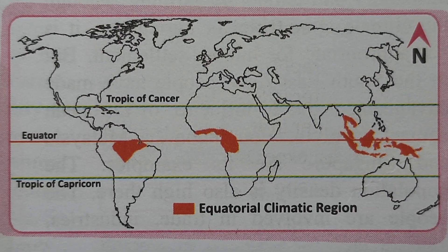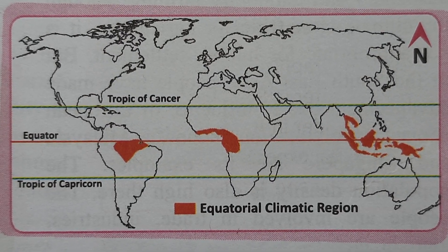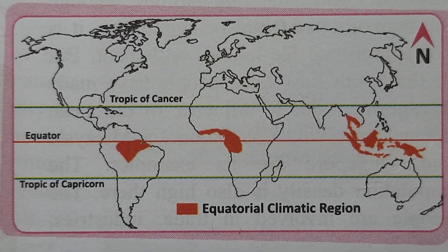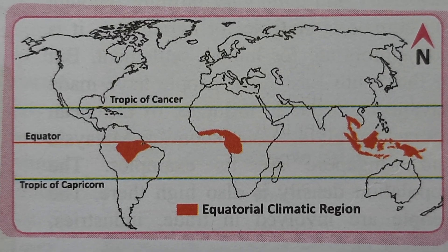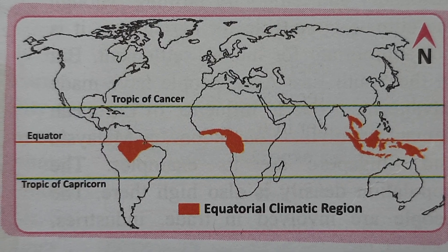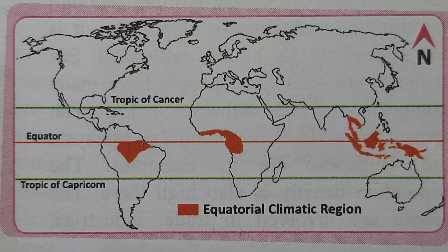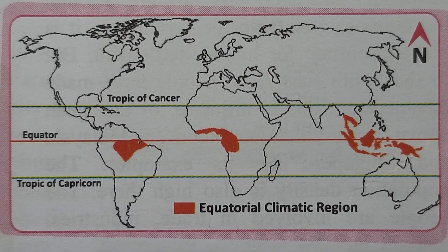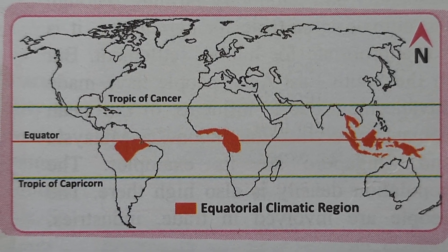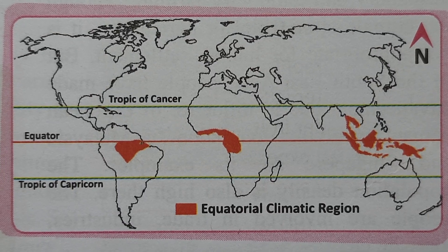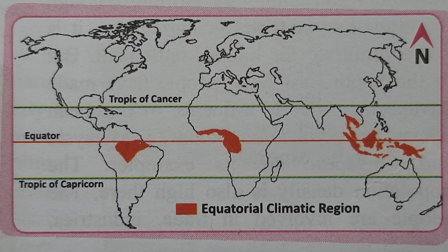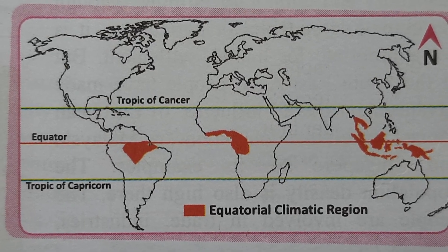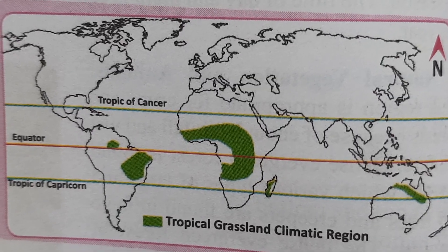This picture shows the equatorial climate zone — the yellow and orange colored areas near the equator, including the Amazon Basin, Congo region of Africa, East Indies, and coastal parts of Australia. From this picture we can identify the equatorial climate region. Once this question is asked in the examination, we will have to identify this as the picture of equatorial climate.